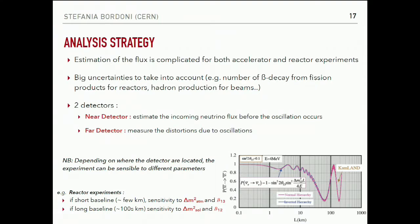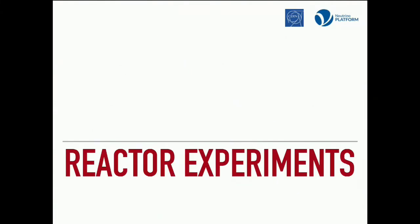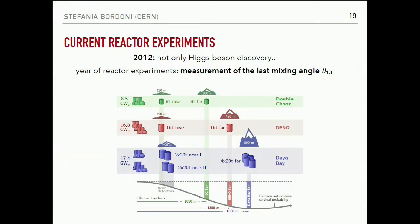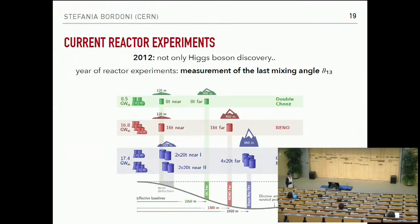Now a review of recent measurements, starting from the reactor experiments. There are three main experiments running and providing nice measurements of theta_13 — and the first measurements all arrived in 2012, the same year as the Higgs. The characteristics of these three experiments are shown here: the nuclear power plant power, information about the near detector, baselines, and composition. Double Chooz has one near detector; RENO has one near detector; Daya Bay has two near sites with two detectors each. Daya Bay also has four far detectors — a really impressive experiment.